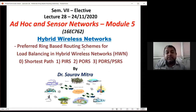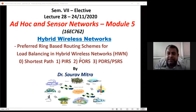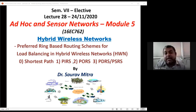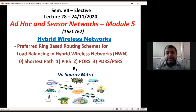Today's lecture is on the preferred ring-based routing scheme for load balancing in hybrid wireless networks — lecture number 28, completing the first part of module five. There are mainly three schemes: PIRS (Preferred Inner Ring Scheme), PORS (Preferred Outer Ring Scheme), and we will find that PIRS is similar to PDRS (Preferred Destination Ring Scheme), while PORS is similar to PSRS (Preferred Source Ring Scheme).